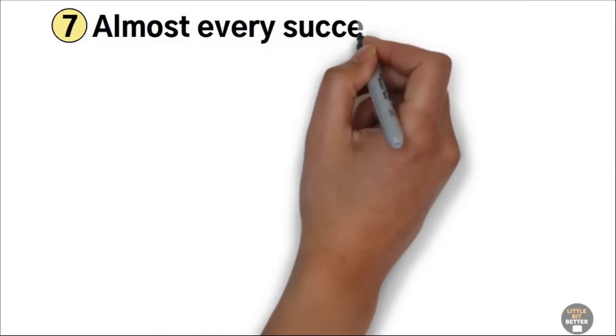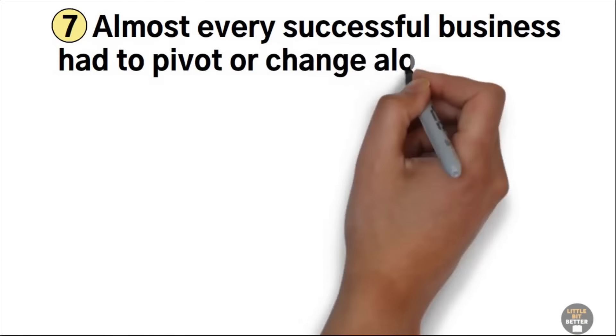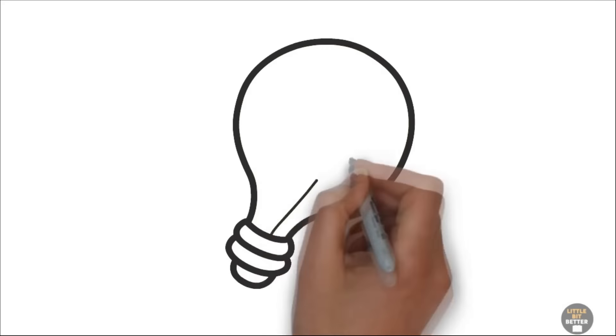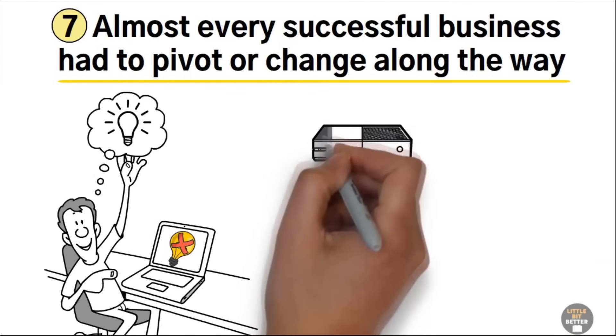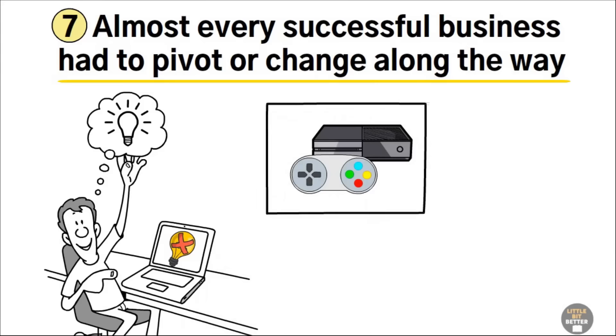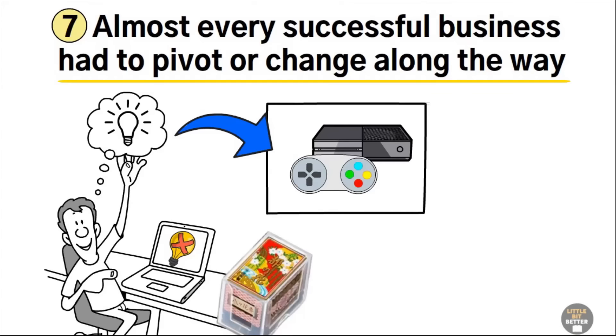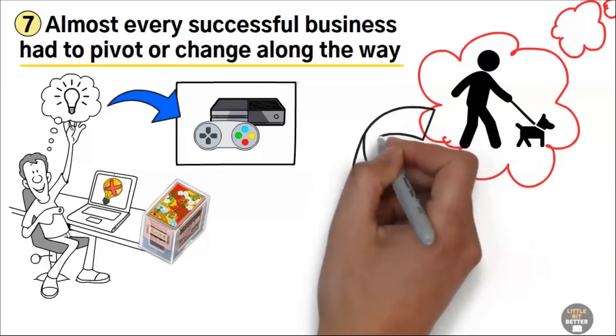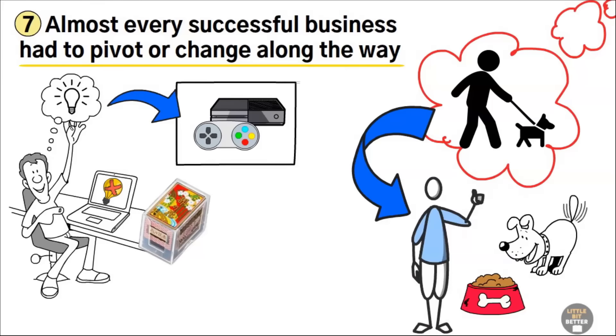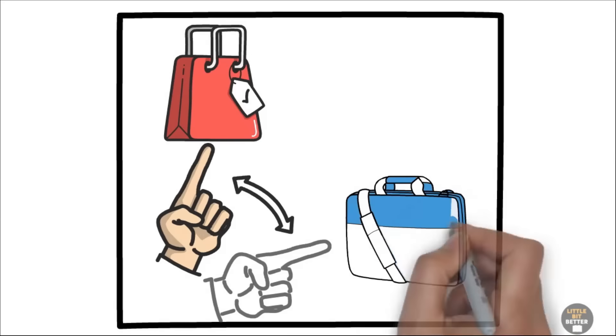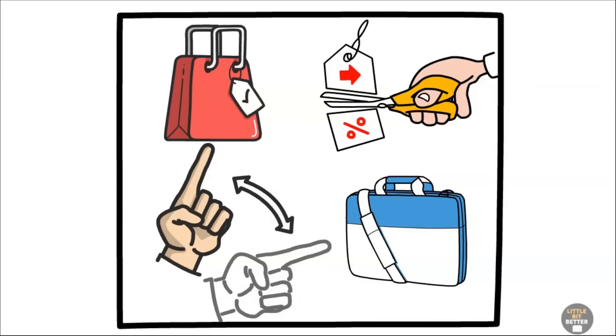Seven, almost every successful business has to pivot or change along the way. You might have picked the wrong market to start with, or your business model might have to shift. Nintendo didn't start out making video game consoles. They made trading cards, just like the dog walking to dog sitting example earlier. You may need to pivot your idea. Don't be afraid to change your product line, to add on a new service, or to adjust your pricing.